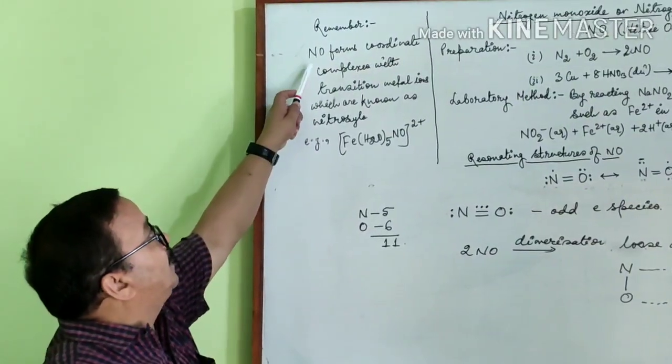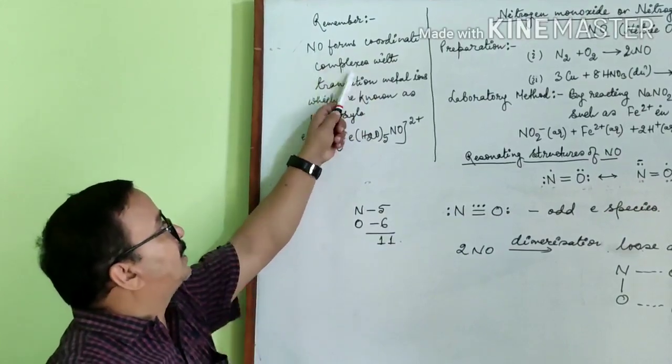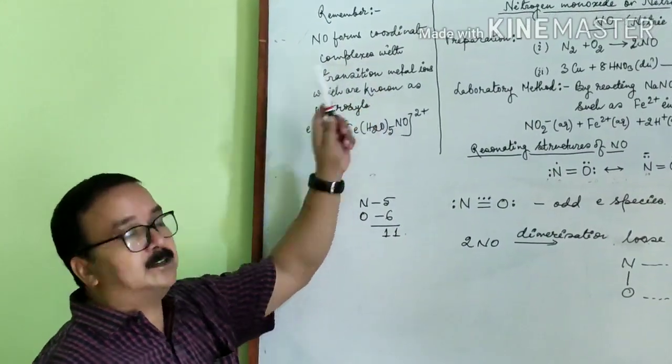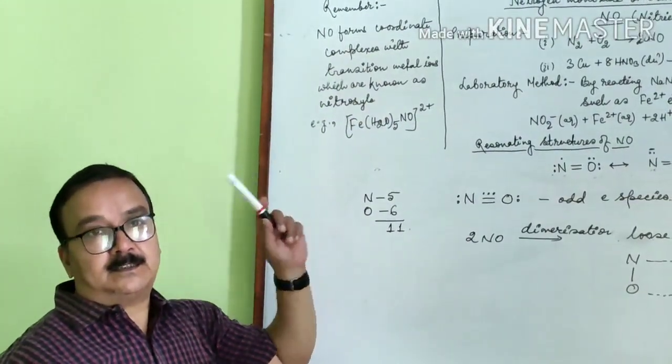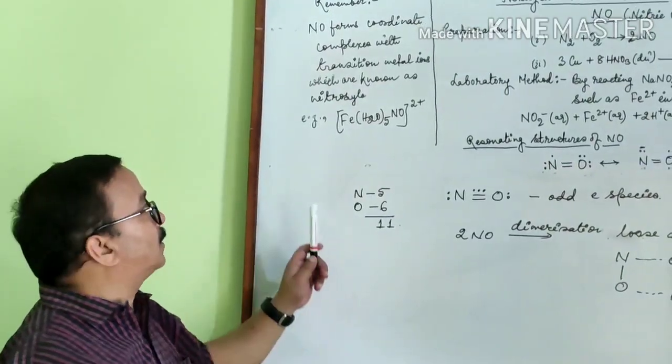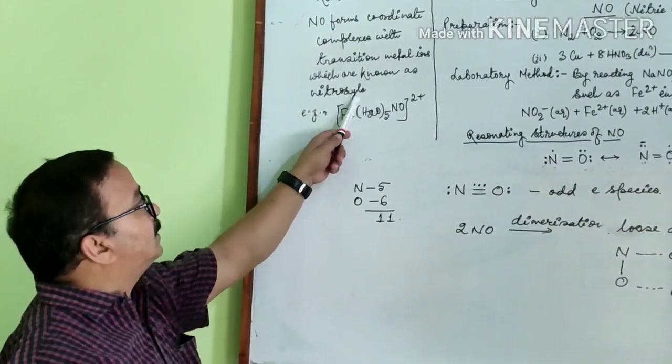Remember, nitric oxide forms coordinate complexes with transition metal ions, that is metal ions of d-block, and forms nitrosyls.